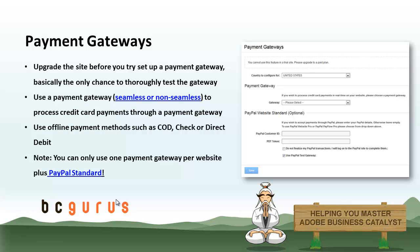Or you can collect credit card details for offline processing. You can also use offline payment methods such as COD, check, or direct debit, and then mark your orders as paid once you check your bank account. Please note that you can only use one payment gateway per website plus the PayPal standard payment gateway; however, you can use as many offline processing methods as you require.